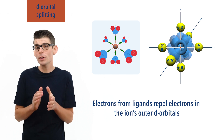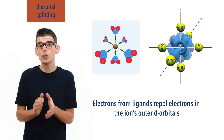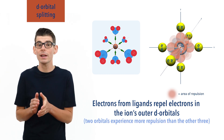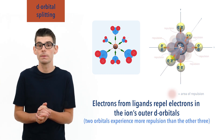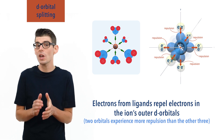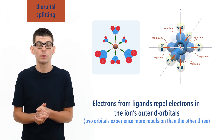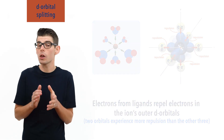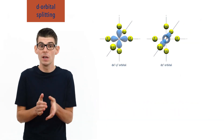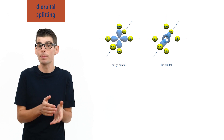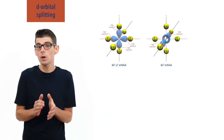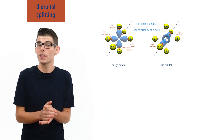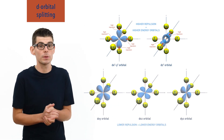For an octahedral complex with six ligands, two outer D orbitals experience more repulsion with the electrons from the incoming ligands. This is due to the shape and arrangement of the D orbitals — any electrons in these two orbitals would be close to the incoming electron pairs from the ligands, leading to repulsion. As a result, their energy would increase and they would now be at a higher energy than the electrons in the other 3D orbitals.